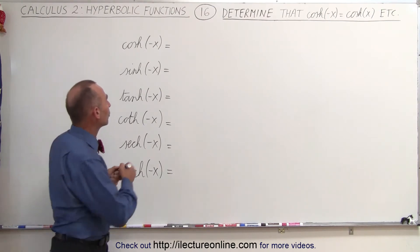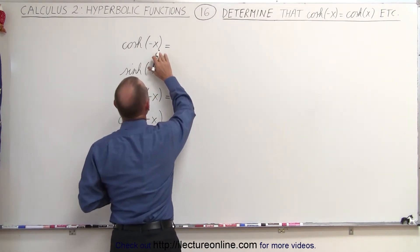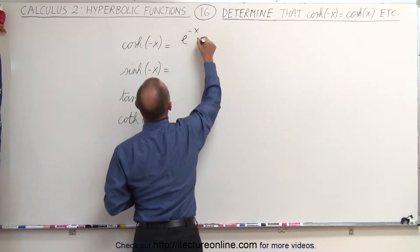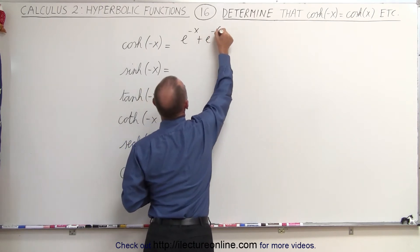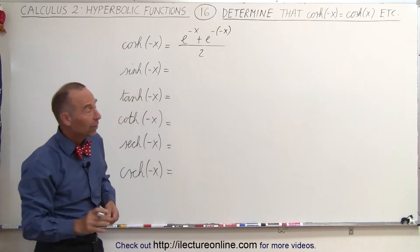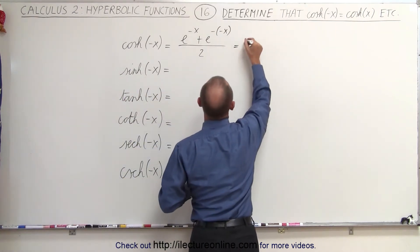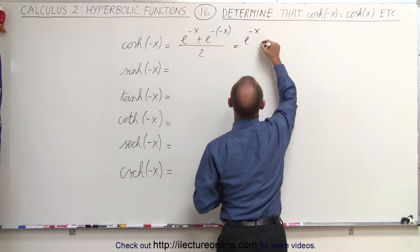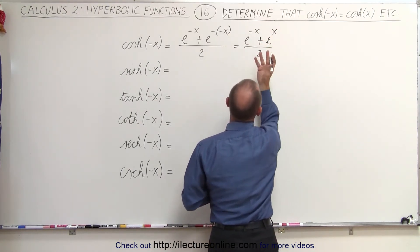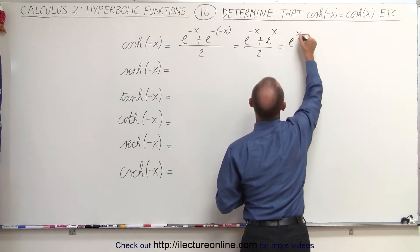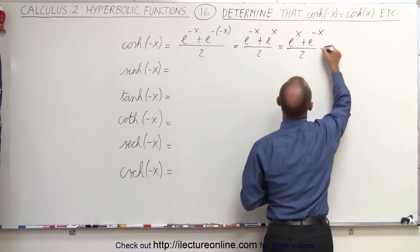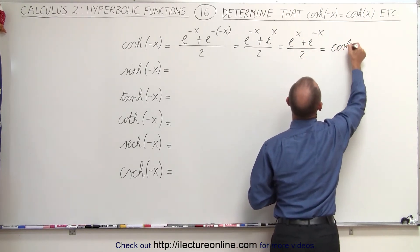What we're going to do here is replace x with a minus x in the equivalent equation. So this is e to the minus x plus e to the minus of minus x, divided by 2. So when we do that we get: e to the minus x plus e to the plus x, divided by 2. And then when we switch the order, we get e to the x plus e to the minus x, divided by 2, which is the exact equivalent to the hyperbolic cosine of x.